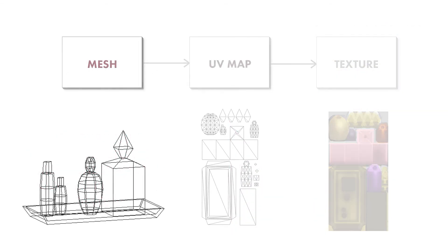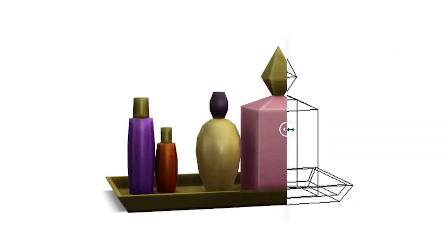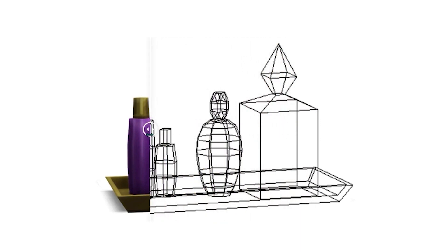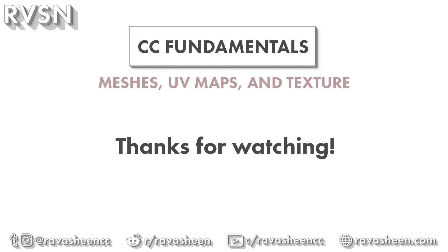So now we've covered the 3D mesh, the UV map, and the texture. Putting all of these different parts together, you get a rendered object that you see here. This is the point in the process of creating CC where you can start to build up your package file and test it in game. In the upcoming tutorials, I will cover what programs are needed, how to use them, and ultimately walk you through the process of making your first CC, which is super exciting. The programs themselves can be quite intimidating, which is why understanding these fundamentals first is so important. I hope you found this tutorial helpful and please feel free to reach out if you have any questions.